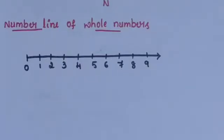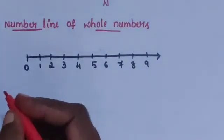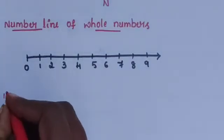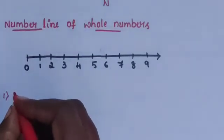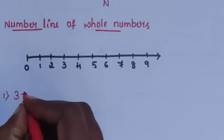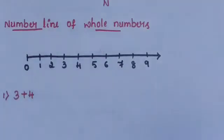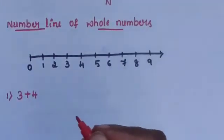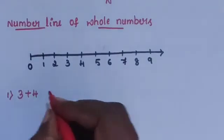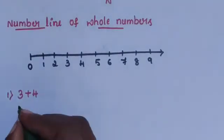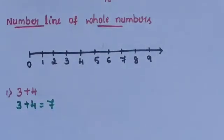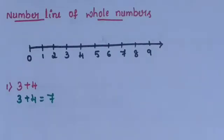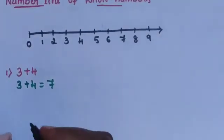Add the numbers using the number line of whole numbers. The first problem is 3 plus 4. 3 plus 4 is equal to 7. Then draw the number line.